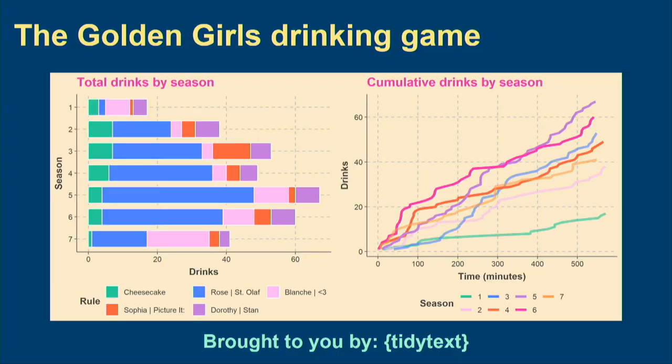I can make this look a lot more like data science with some charts. If you and your friends are hanging out one night and playing the Golden Girls drinking game, which season should you watch to maximize your drink consumption? If you're not familiar with drinking games, you basically watch a television show, and each time one of the characters performs a specific action, you take a sip of your drink.